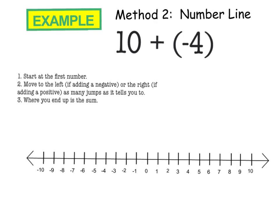And one final one on the number line here. We have 10 plus negative 4. Again, I start at that first number, and now I'm adding a negative. So since it's negative, I'm moving left, and I'm going back 4: 1, 2, 3, 4. And my answer here is 6.